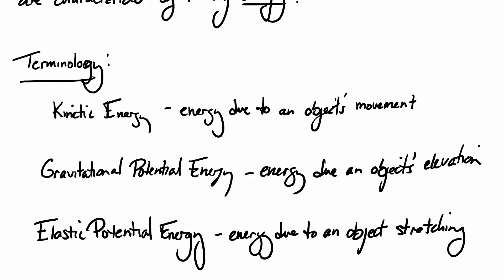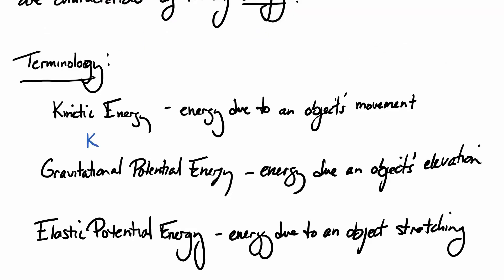So we're going to look at three major types of energy to start. Kinetic energy, we're going to use a K to represent. Gravitational potential energy, which will be UG, and elastic potential energy, which will be US, because usually we're talking about spring when we talk about elastic.